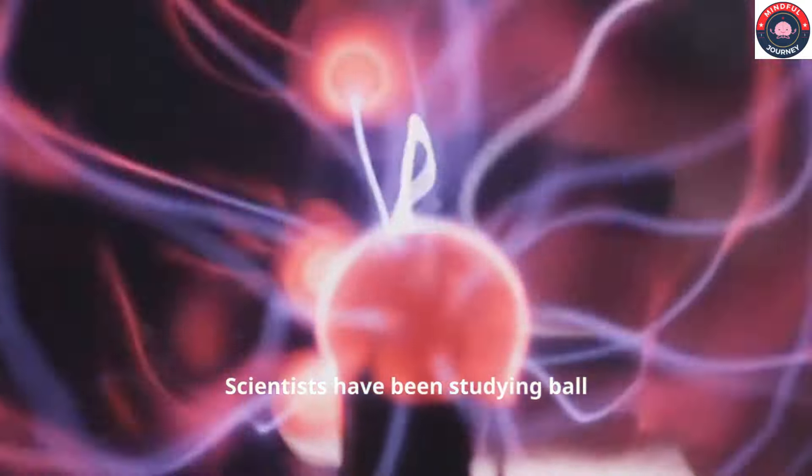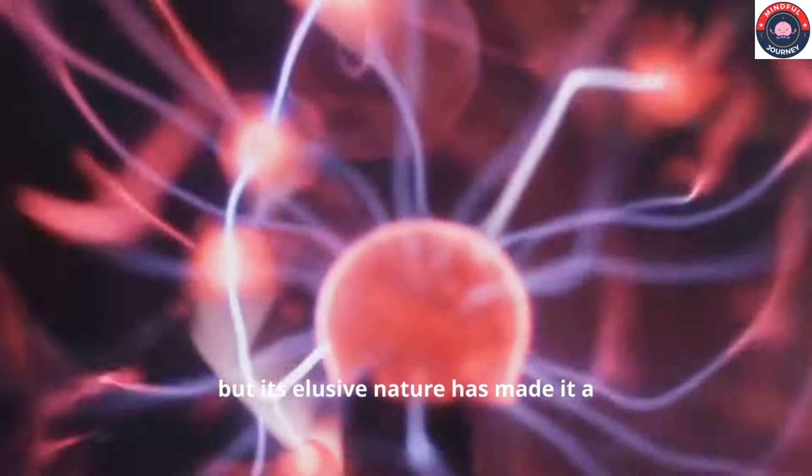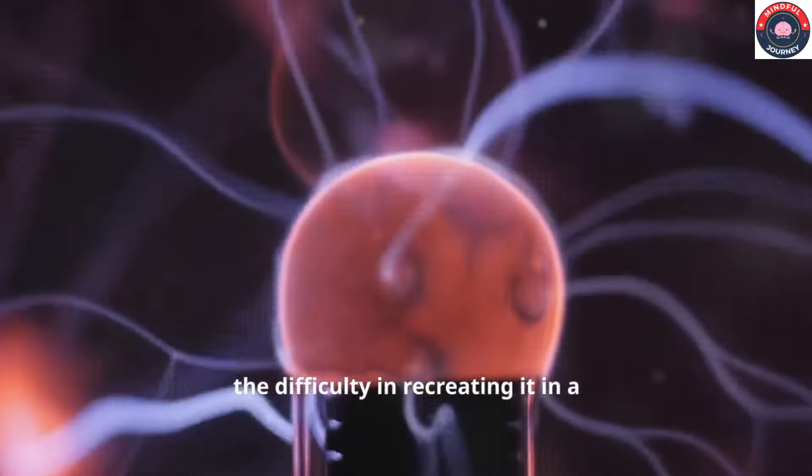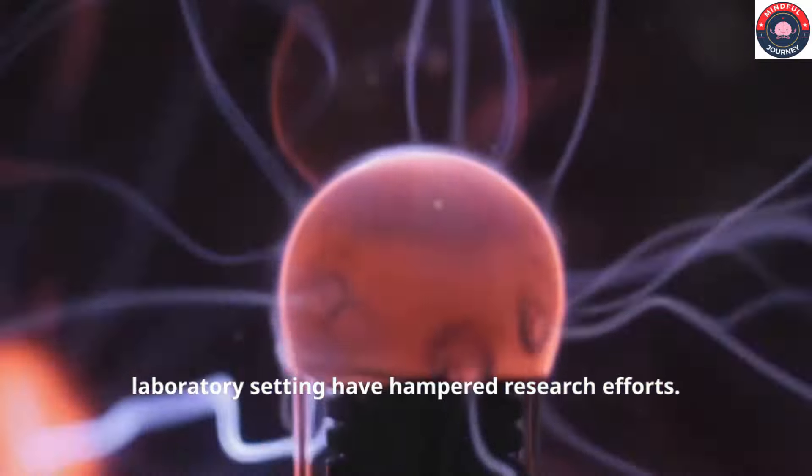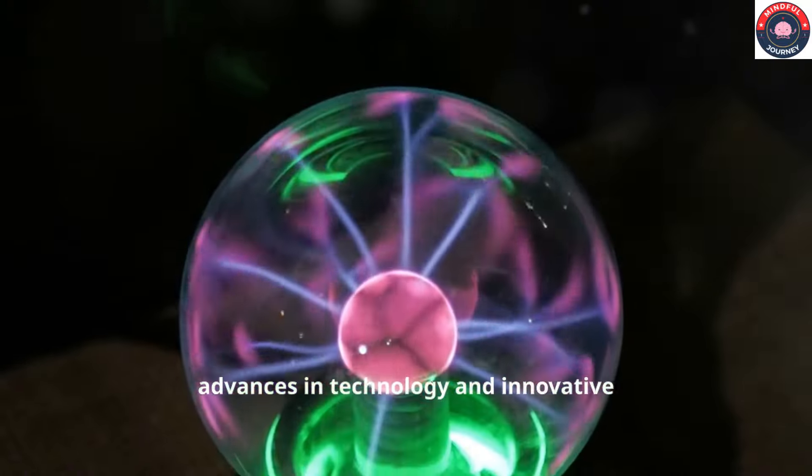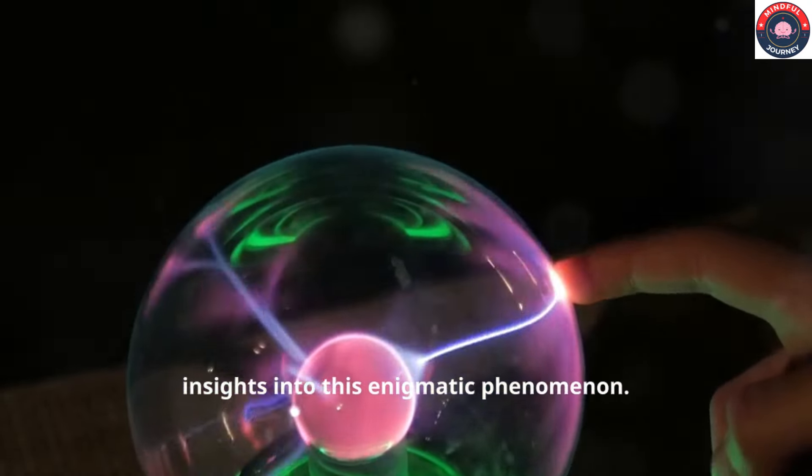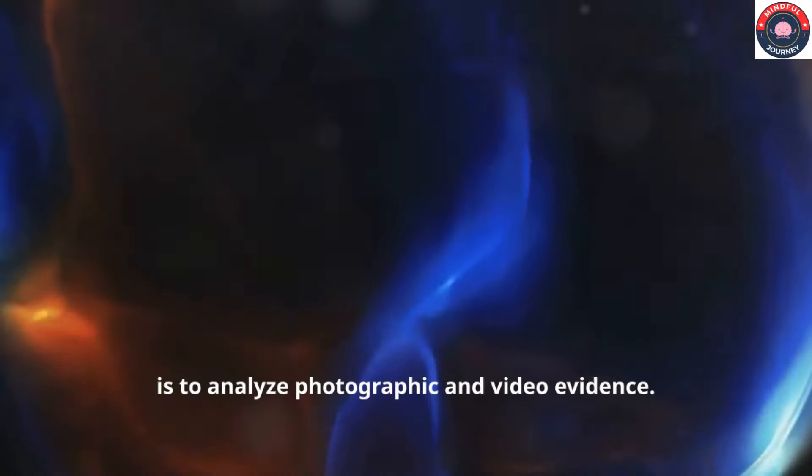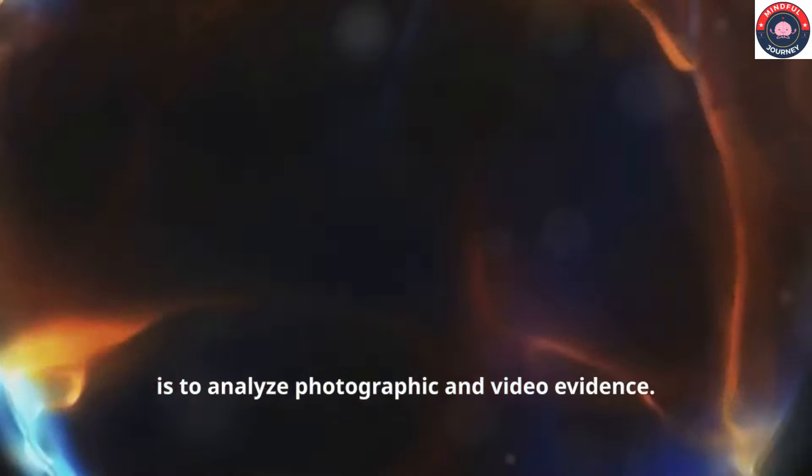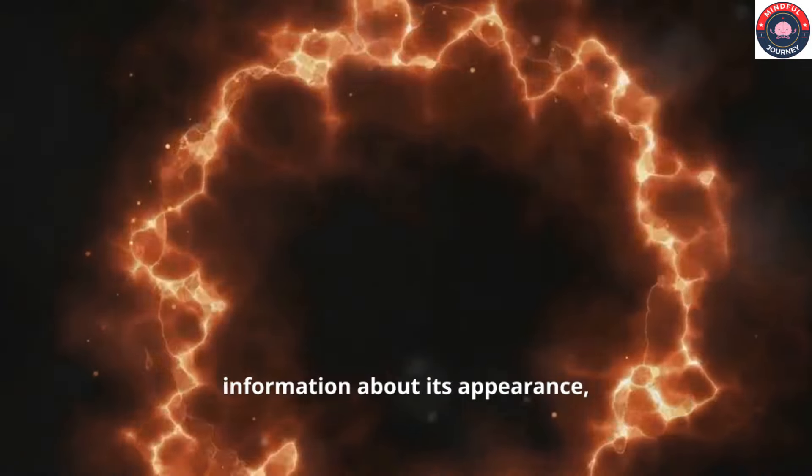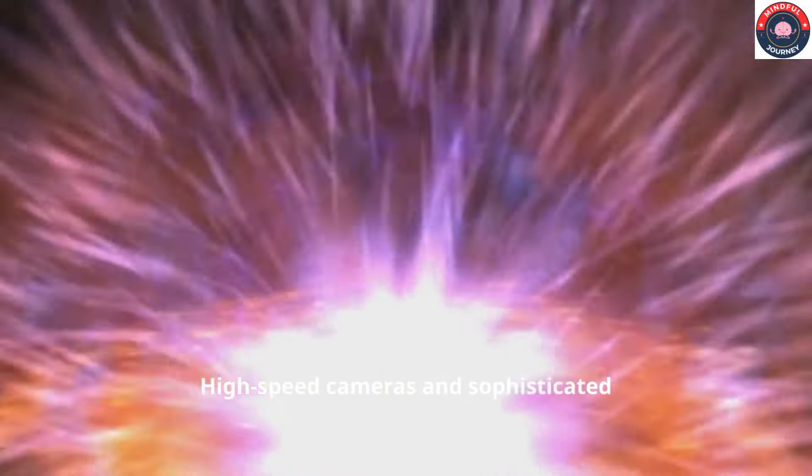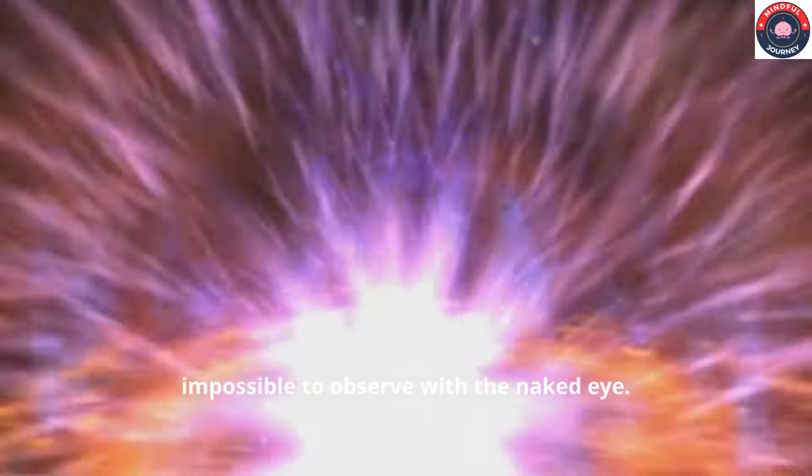Scientists have been studying ball lightning for centuries, but its elusive nature has made it a challenging subject. The lack of consistent observations and the difficulty in recreating it in a laboratory setting have hampered research efforts. However, advances in technology and innovative research methods are providing new insights into this enigmatic phenomenon. One approach to studying ball lightning is to analyze photographic and video evidence. While rare, these recordings can provide valuable information about its appearance, movement and behavior. High-speed cameras and sophisticated imaging techniques allow scientists to capture fleeting details that would be impossible to observe with the naked eye.